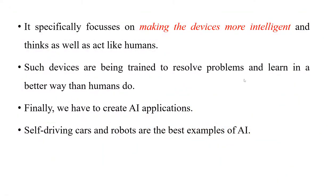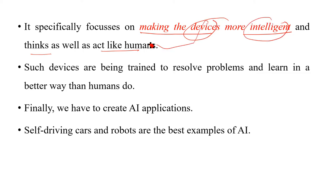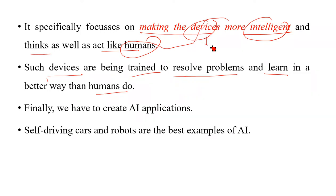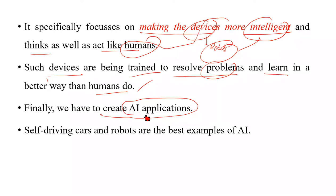AI is specifically focused on making devices more intelligent, so they think as well as humans. These devices are trained to solve problems and learn in better ways than humans do — for example, robots. We make robots more intelligent so they think like humans and resolve problems better than humans. Finally, we create AI applications such as self-driving cars and robots, which are the best examples of artificial intelligence.